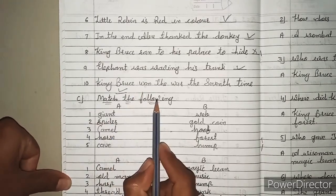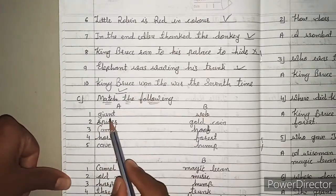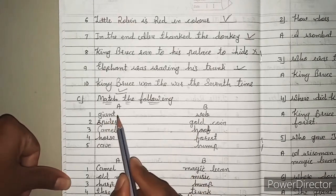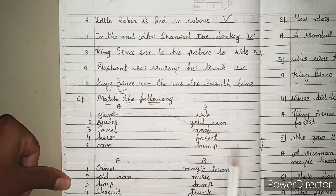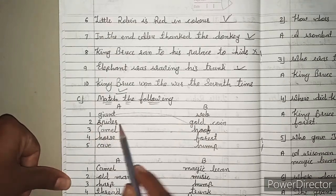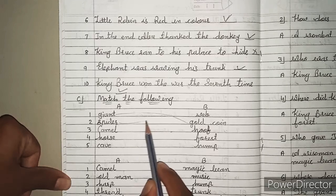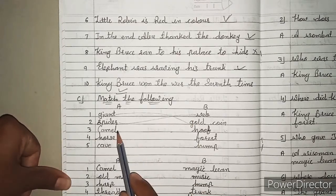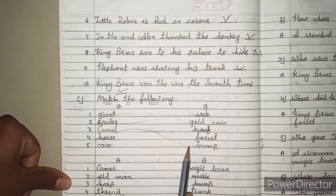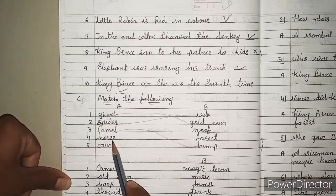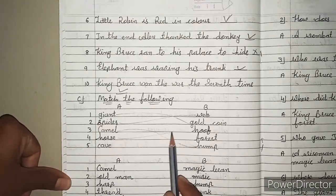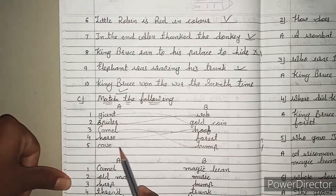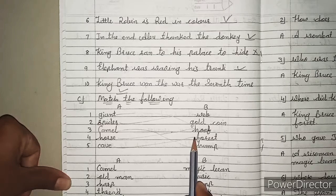Now see, match the following. A-B. 1. Giant — तो Giant के पास क्या था? Gold coin. Right? 2. Spider — Spider क्या बुन रहा था? अपनी web. 3. Camel — Camel को क्या होता है? Hump. 4. Horse — Horse को क्या होता है? Hoof. 5. Cave — Cave कहाँ पर था? Forest में. Right.